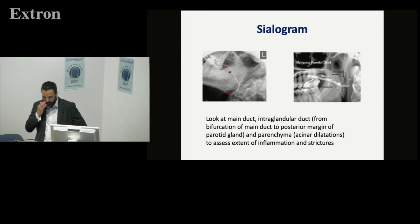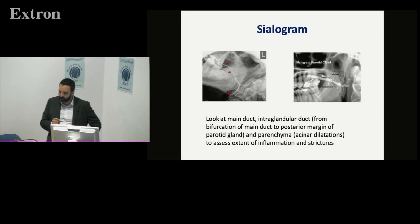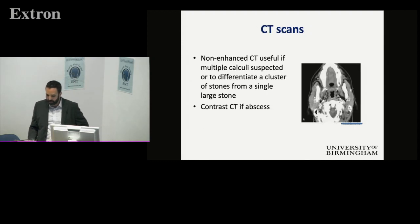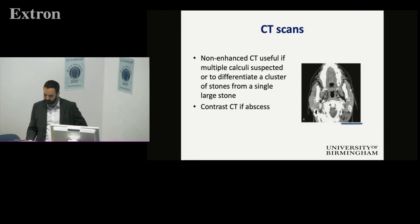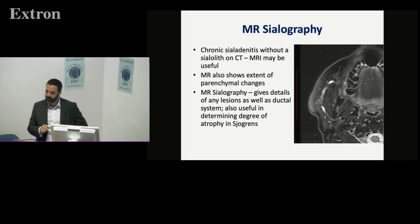Sialography — experienced head and neck radiologists can carry this out. A bit of dye down the duct really clearly identifies any narrowing or strictures, and if a stone is present, whether it may be amenable to other methods of removal. Non-enhanced CT is useful if thinking about stones; if thinking about infection, don't forget you need contrast as well. Small stones might be hard to see unless you've got a high-definition CT. MRI is also useful for looking at soft tissue within the parotid gland itself and can reveal incidental findings picked up on ultrasound.